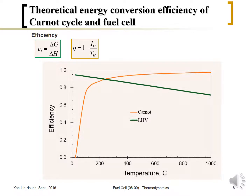Plotting both efficiencies as a function of temperature, we can see that for the fuel cell — using the lower heating value — efficiency decreases linearly as temperature increases. For the Carnot cycle, when T_H equals 25°C the efficiency equals zero, and as T_H increases the efficiency increases and gradually levels out toward one. There is an intersection point: the heat engine prefers to operate at as high a temperature as possible, while the fuel cell should operate at as low a temperature as possible.